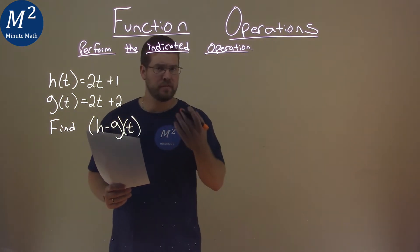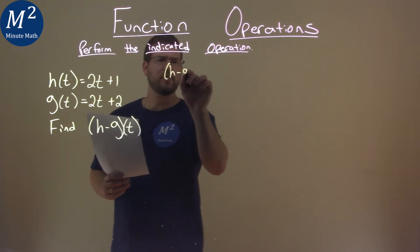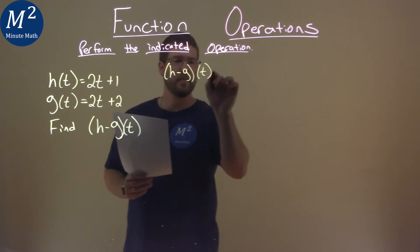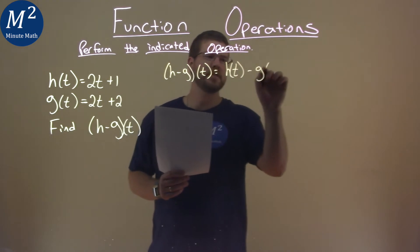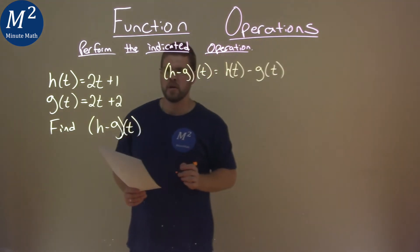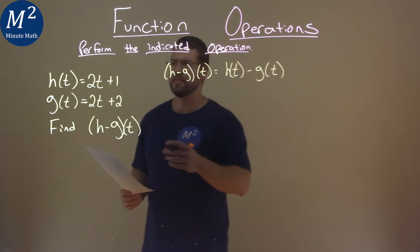Well, what is h minus g of t? h minus g of t is equal to h of t minus g of t. So now, what's h of t? Well, we were given that.